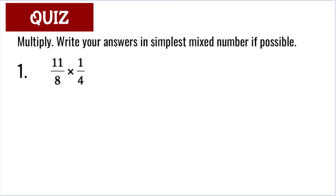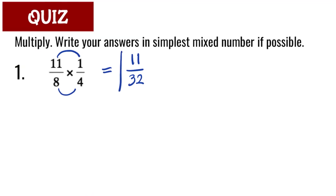Question number 1: 11 over 8 times 1 over 4. Step 1, multiply numerators 11 and 1 — that's 11. Step 2, multiply denominators 8 and 4 — that is 32. There is no number that can divide both 11 and 32, so 11 over 32 is the simplest form for question number 1.